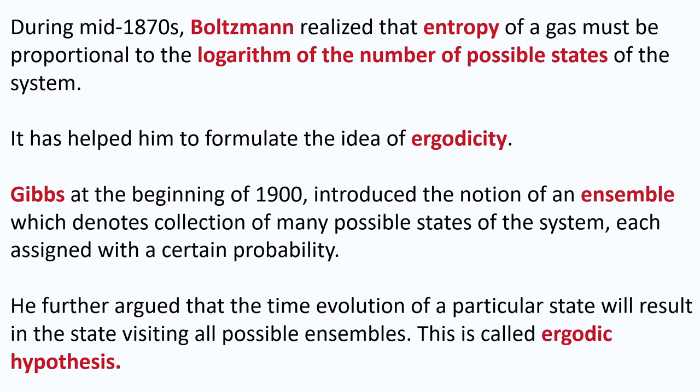The ensemble denotes a collection of many possible states of the system, each assigned with a certain probability. Gibbs argued that the time evolution of a particular state will result in the state visiting all possible ensembles. For a classical gas where atoms or molecules are randomly moving, you construct a large number of copies of the system with molecules distributed differently as time progresses, and take the time average by averaging over the ensembles. This is called the ergodic hypothesis.